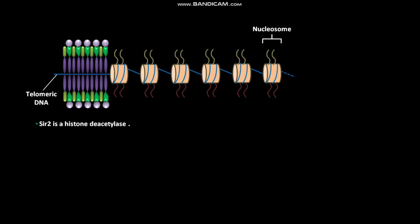SIR2 is a histone deacetylase. SIR2 protein removes acetyl groups on lysines of the histone tails, deacetylating the tails on histones neighboring the repeated RAP1 binding sites. As a result, hypoacetylated histone N-terminal tails are produced.